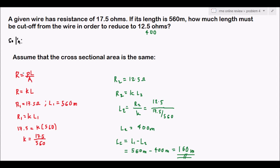We utilized the resistance formula. The assumption is that the wire is the same material with the same cross-sectional area, so resistance is directly proportional to length. When the resistance decreases, the length also decreases — that is why we solved for the length to be cut off.